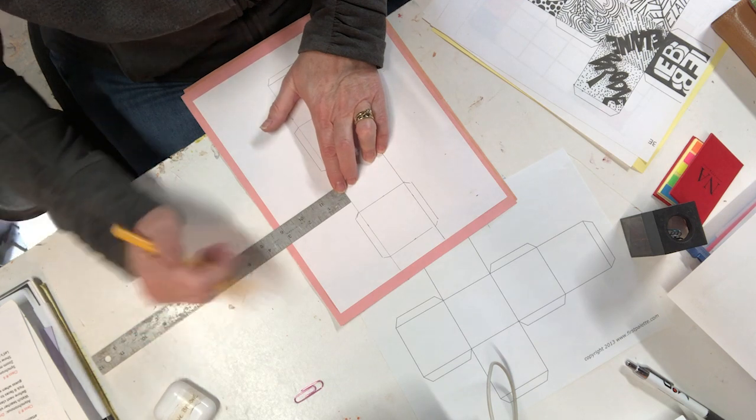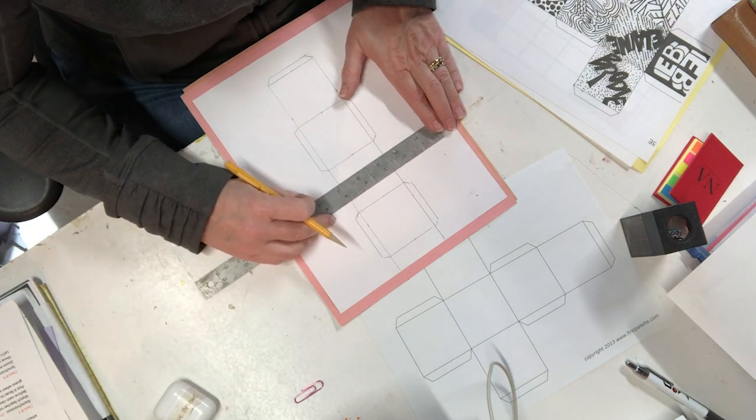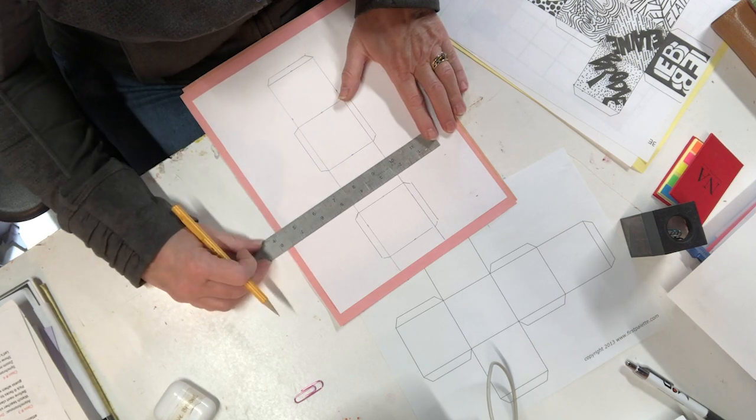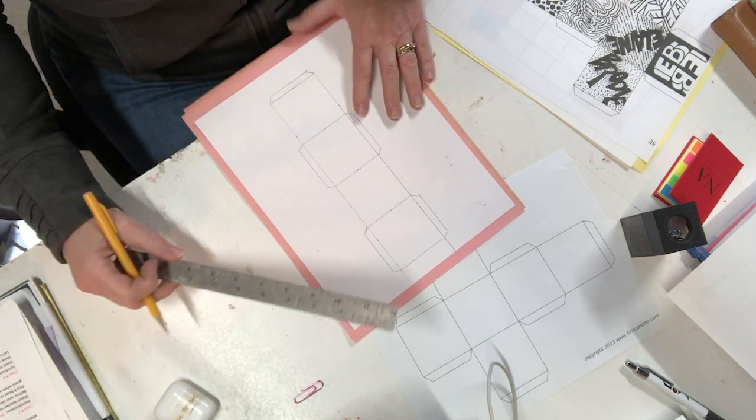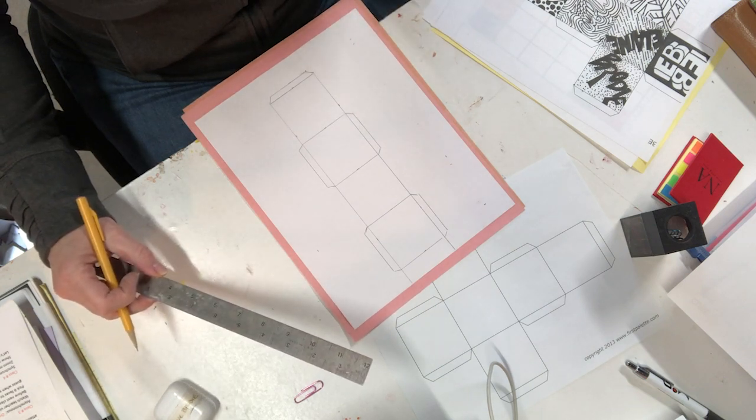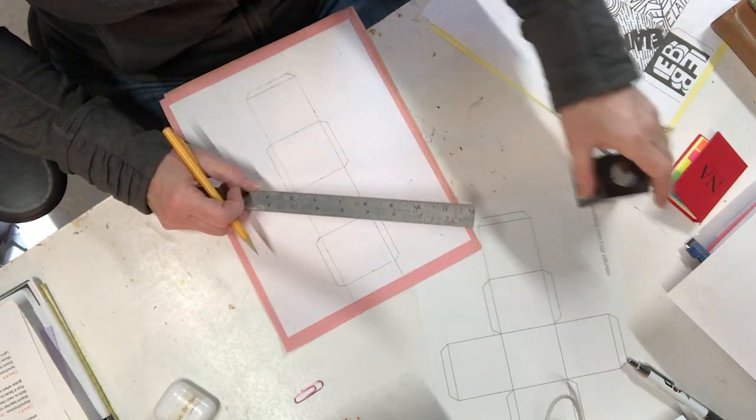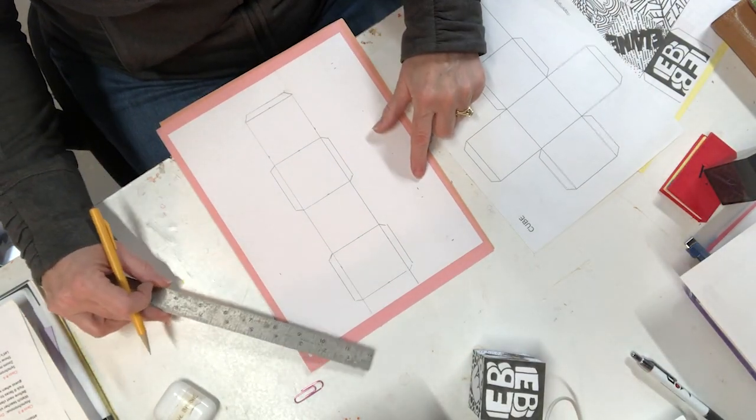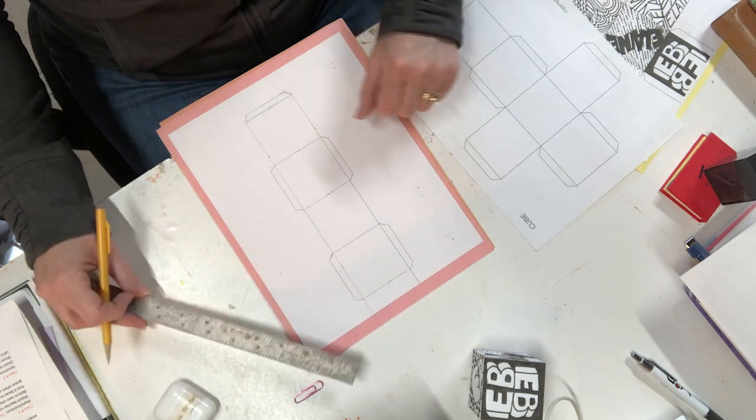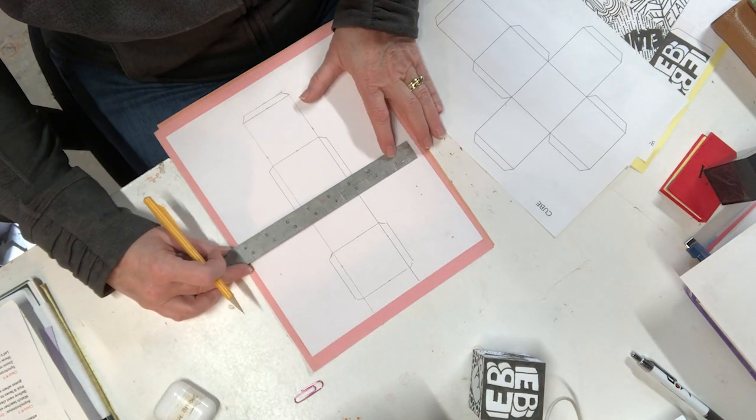I'm going to come out two and a quarter, and come out two and a quarter. Mark that off good. I've got lots of marks on my paper now that can be confusing. I need to make sure those are in a straight line.